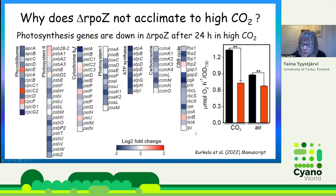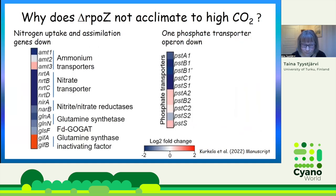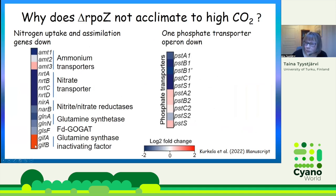And also many Calvin-Benson cycle enzymes were downregulated in our Delta-RPOZ strain, so cells are not growing fast in high CO2. If the photosynthetic complexes are not normally upregulated, that's not a surprise. Nitrogen uptake and assimilation genes were also downregulated — especially nitrate transporters were highly downregulated, as were nitrate and nitrite reductases and glutamine synthetases. Whereas the glutamine synthetase-inactivating factors were upregulated. Clearly, nitrogen uptake and assimilation were downregulated in Delta-RPOZ cells in high CO2.